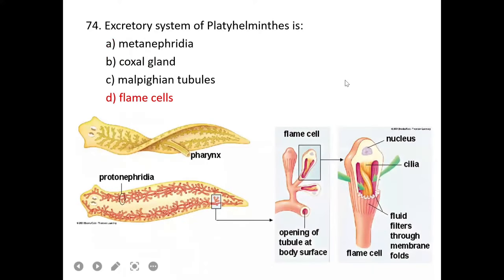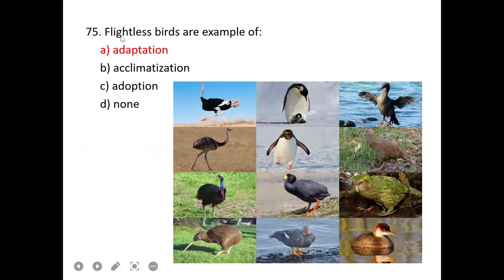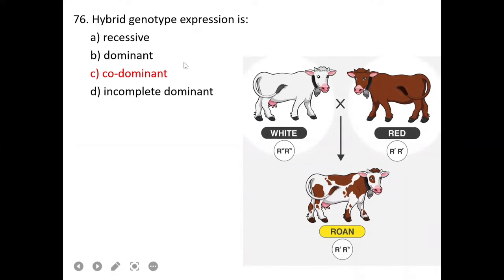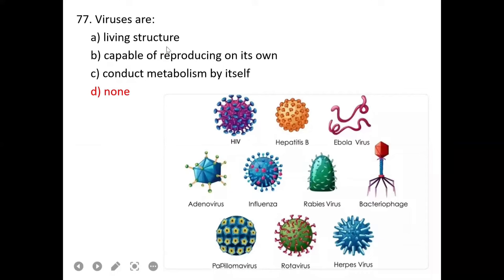Flightless birds are an example of vestigial adaptation. Hybrid genotype expression: if we get offspring hybrid, this is a co-dominance example. Viruses are borderline between living and non-living. A is not correct. They are not capable of reproducing on their own and cannot conduct metabolism. So D is correct.